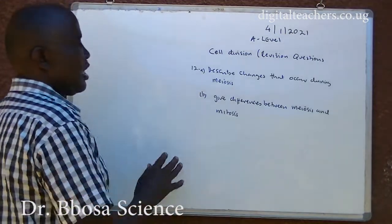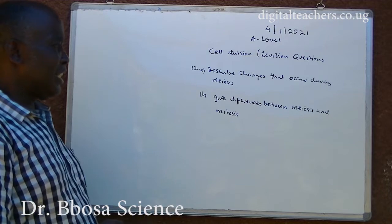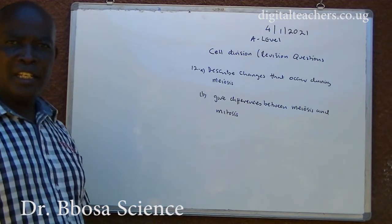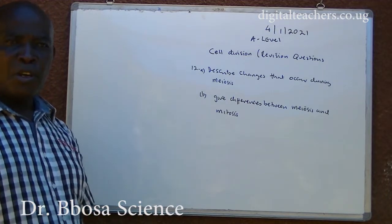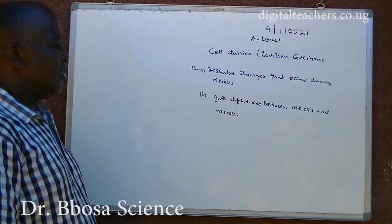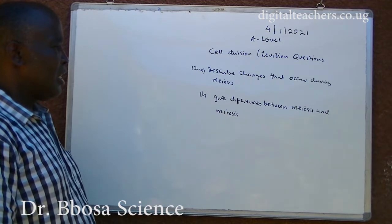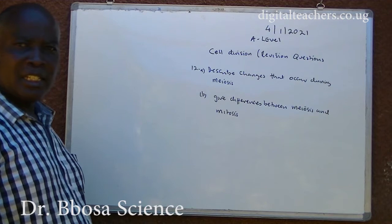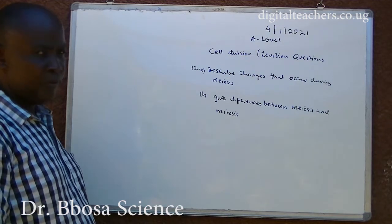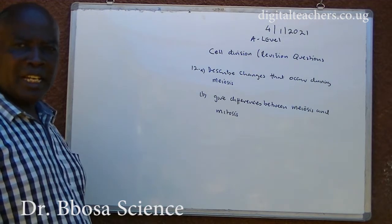Number 12. Describe the changes that occur A. During meiosis. B. Give differences between meiosis and mitosis. You can pause and answer.